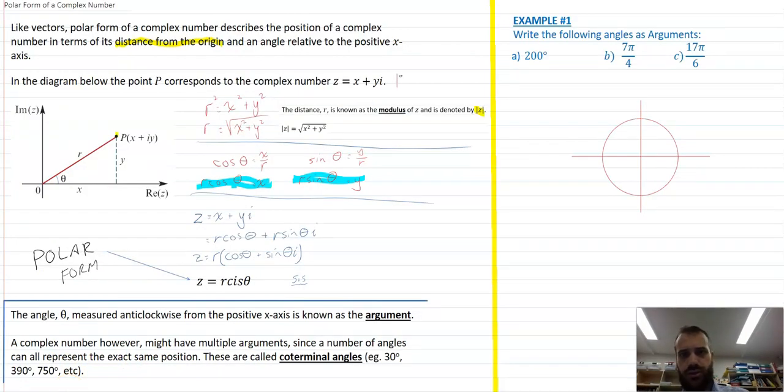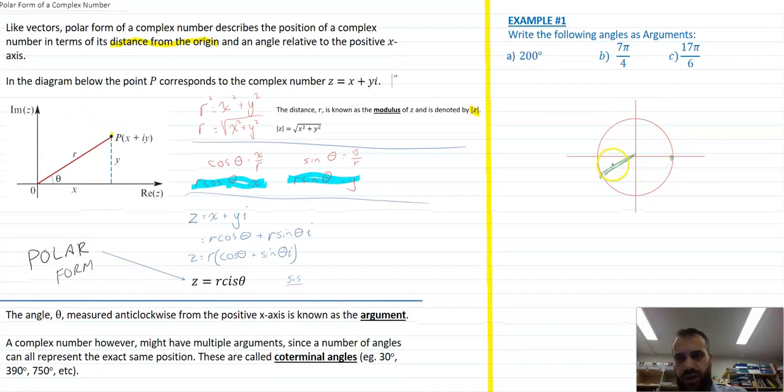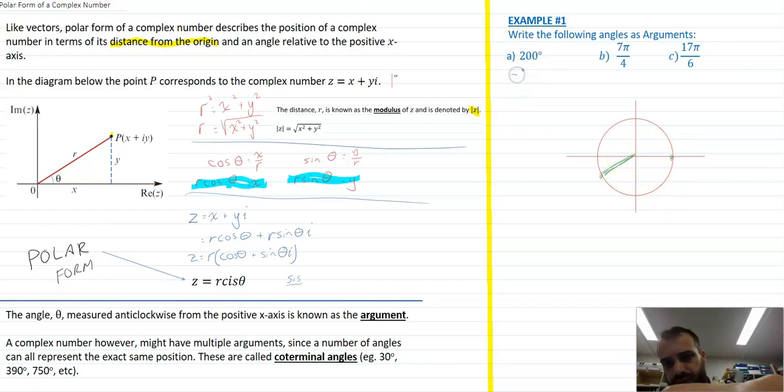So let's do three quick questions here. Write the following angles as arguments. First one's 200 degrees. So we start here, we move around 200 degrees, and we get to there. But, it says here that arguments are measured from negative pi to pi, from negative 180 to positive 180. We've gone too far. So instead of moving positive 200, we should take the negative way around. And so the argument of 200 degrees is negative 160 degrees. That's 200, so that's negative 160.